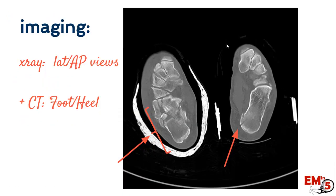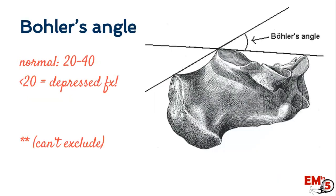If you do think you have a calcaneal fracture, the next step is to get a CT of the foot and heel. This is mostly to help define where the fracture is and help the orthopedic surgeon decide their management. One big thing we have to look for on the lateral view of the x-ray is to measure Böhler's angle. I encourage you to do this for every x-ray of the ankle or foot — even just eyeball this angle — because if it's flattened at all, it could be a calcaneal fracture that you might not otherwise see.